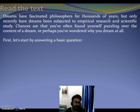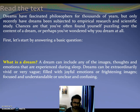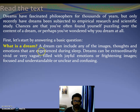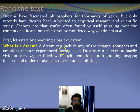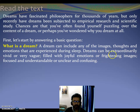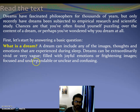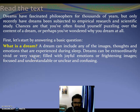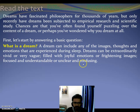What is dream? A dream can include any of the images, thoughts, and emotions that are experienced during sleep. So we do not see dreams actually — we experience them during our sleep, and they can include images, thoughts, and emotions. Dreams can be extraordinarily vivid or very vague, filled with joyful emotions or frightening images, focused and understandable or unclear and confusing. So a dream can be very clear or vague, joyful or frightening, focused or completely confusing.